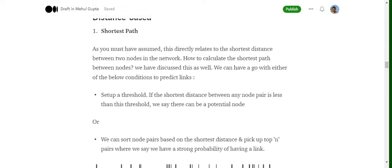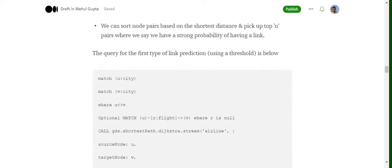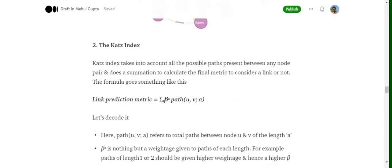The second thing that we can do is we can calculate the shortest path between each and every node pair where we don't have an edge as of now, and then have a threshold that if the shortest path is less than this particular threshold, a future edge might be present, else a future edge is not possible. So these are the two variants of the shortest path.